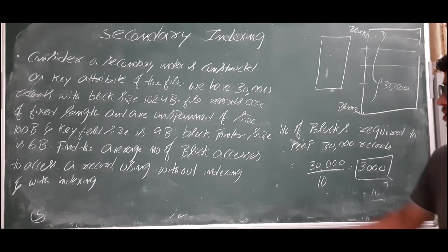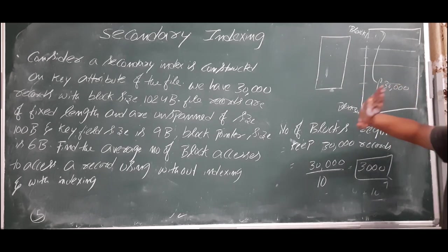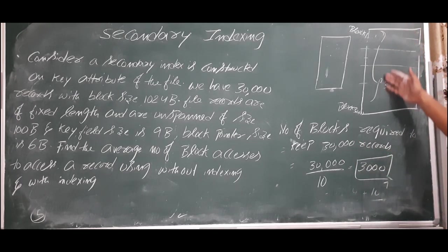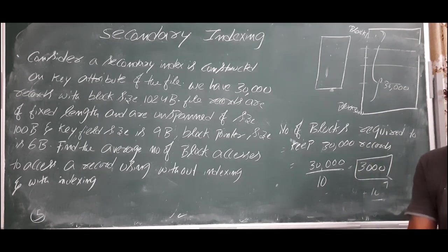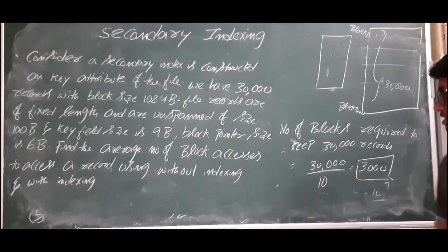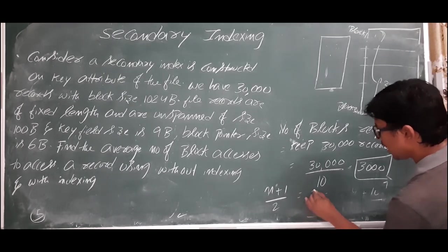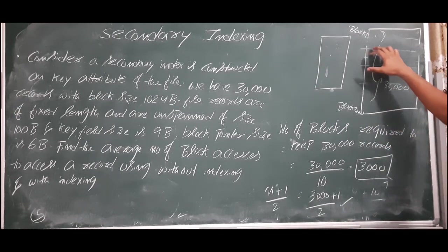Part 1: Find the average number of block accesses without indexing. With no indexing and unsorted records, we cannot apply binary search, so we must use linear search. The average time complexity of linear search is (n+1)/2. So we need (3000+1)/2 block accesses to access a record.